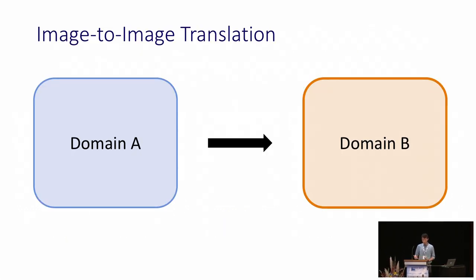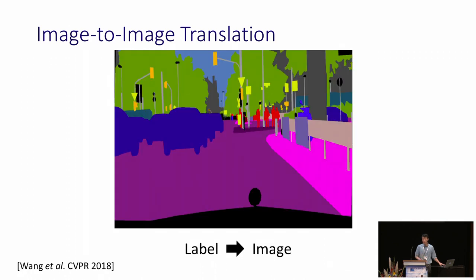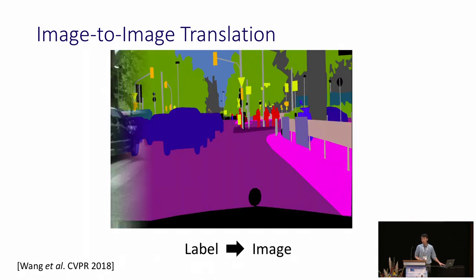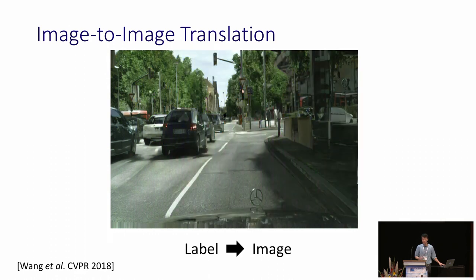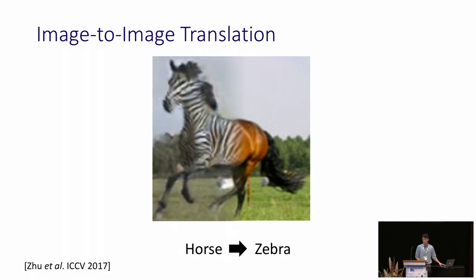Image-to-image translation aims to learn the mapping between two visual domains. For example, in colorization, we learn to map grayscale to color images. In image synthesis, we learn to map semantic labels to real images. We can even learn a mapping for two domains where corresponding paired data does not even exist, for example, horse to zebra.